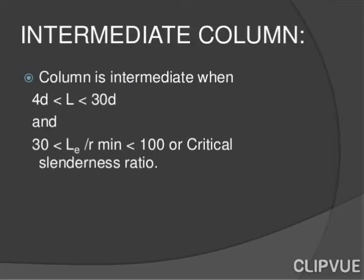Intermediate column: A column is intermediate when 4D < L < 30D, and 30 < Le/R_min < 100, or critical slenderness ratio falls within that range.